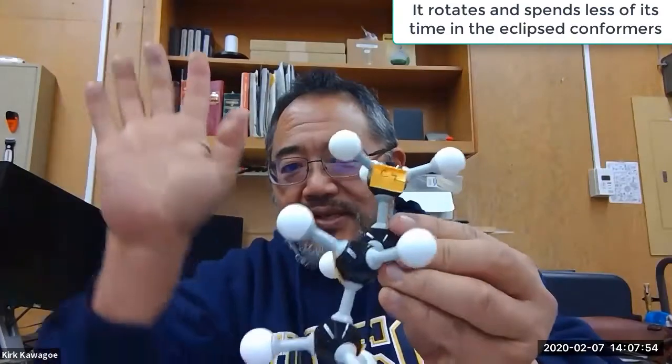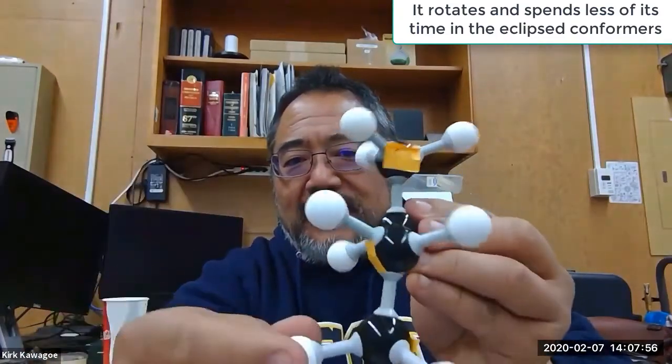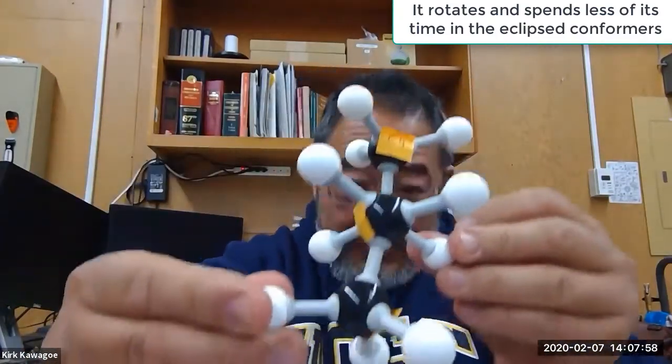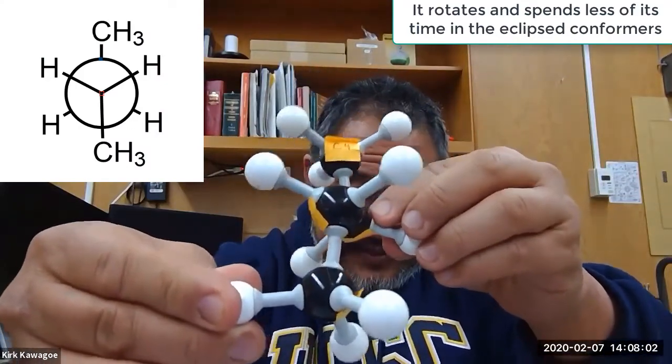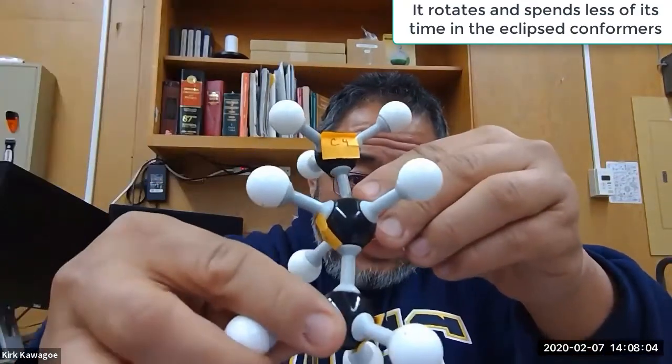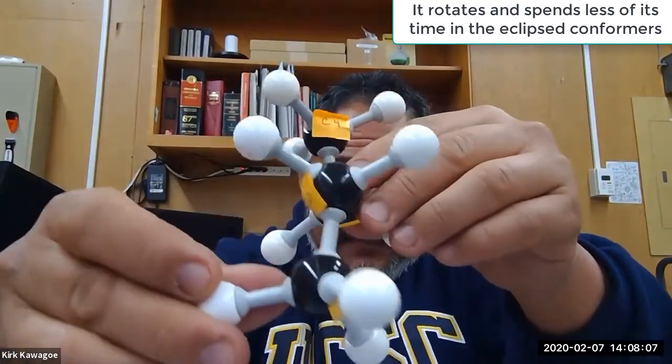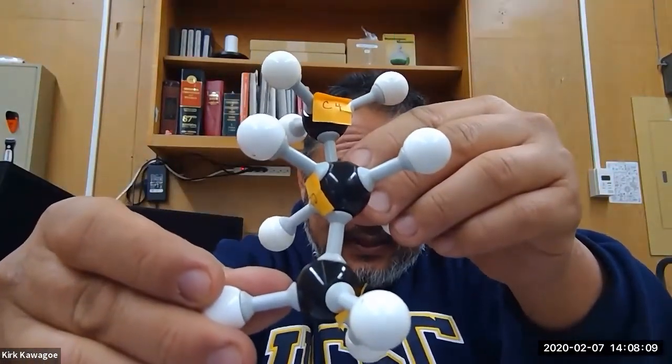So when I do that we're going to show this Newman projection and turn it this way so you can see C2. Oh by the way we're in a lab so if you hear a lot of noise that's what that is. It looks like that. So I'll draw that Newman projection on the screen and I'll post that up so you can see it.